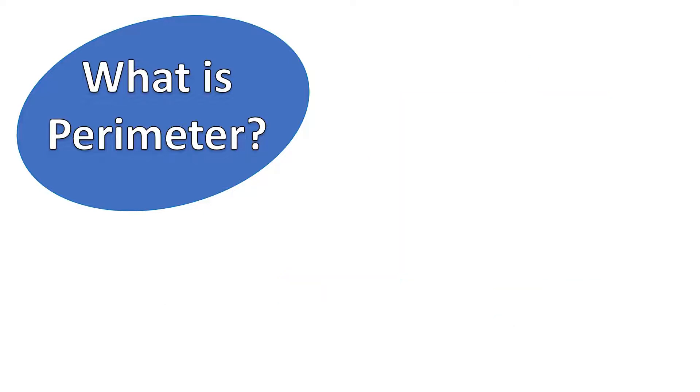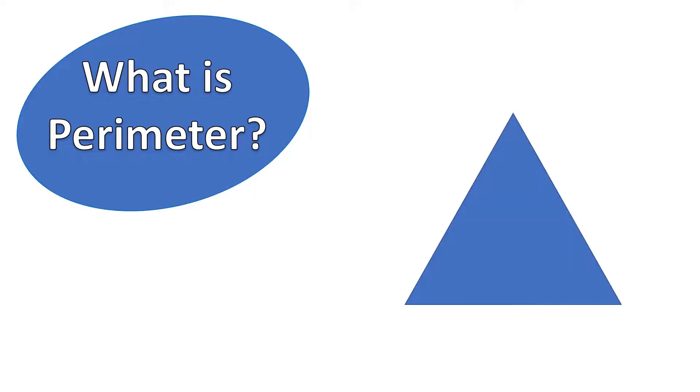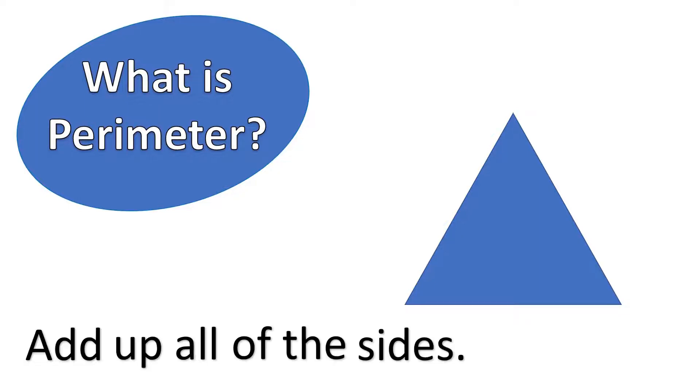Okay, so I think you might be getting the gist of how we find perimeter now. So let's take a look at another example. Here we have a triangle. So what is the perimeter of the triangle? First, we need to remind ourselves, how do we find perimeter? Yes, by adding up all of the sides of the shape.